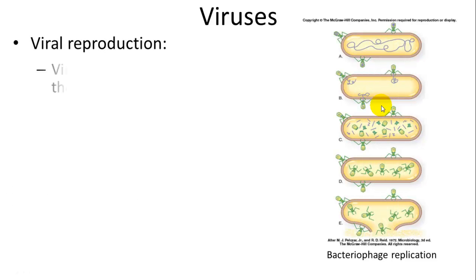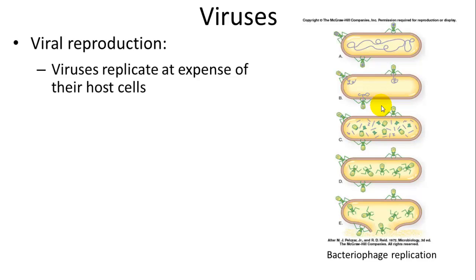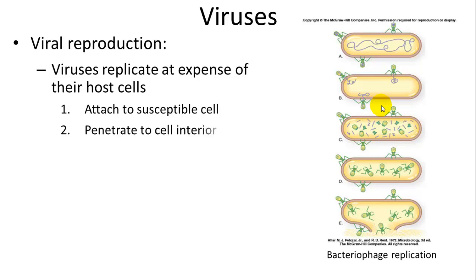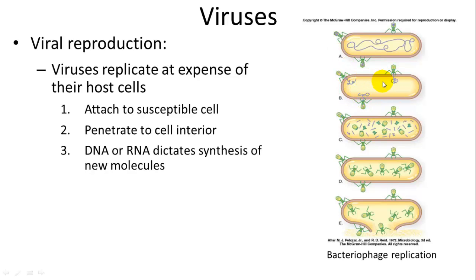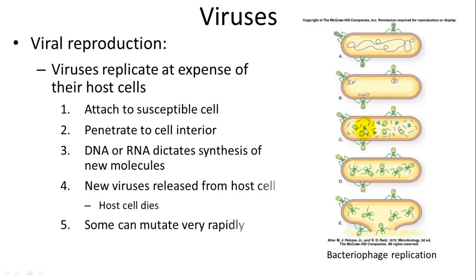Viral reproduction goes like this: it first replicates at the expense of host cells — the host cell does all the work, reducing the cell's ability to function. The virus attaches and penetrates to the cell interior. The DNA or RNA then dictates synthesis of new molecules — new protein tails, heads, and more RNA and DNA. The new virus is then released from the host cell, and the host cell dies. Some viruses can mutate very rapidly because they are just RNA or DNA and don't have enzymes to check and correct.